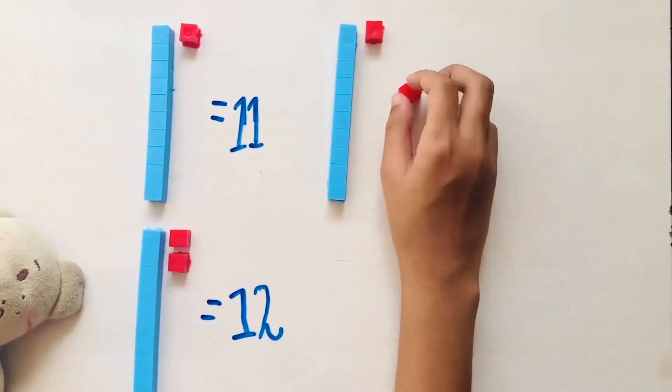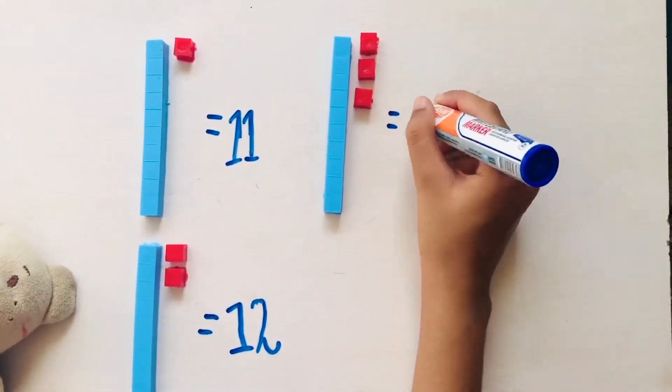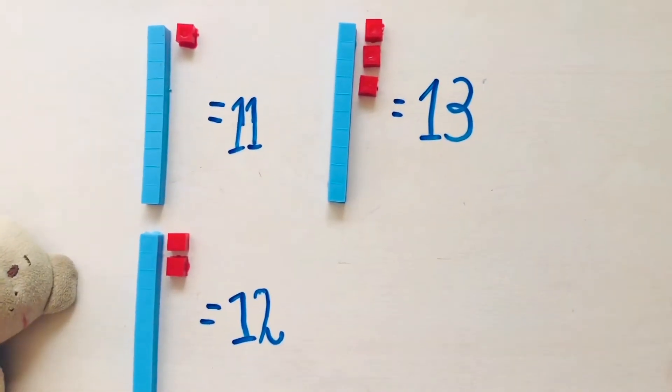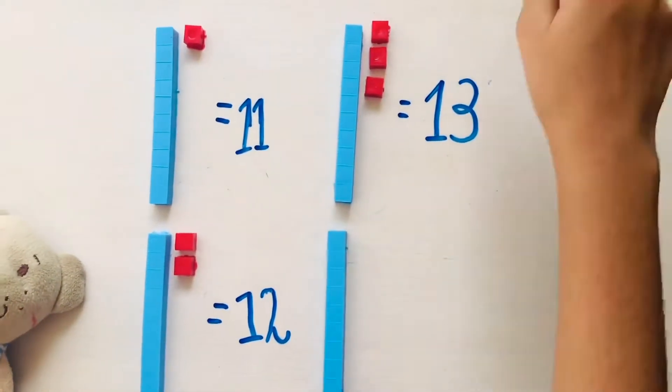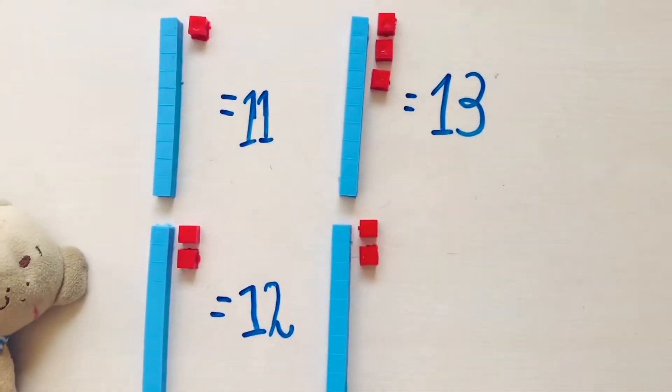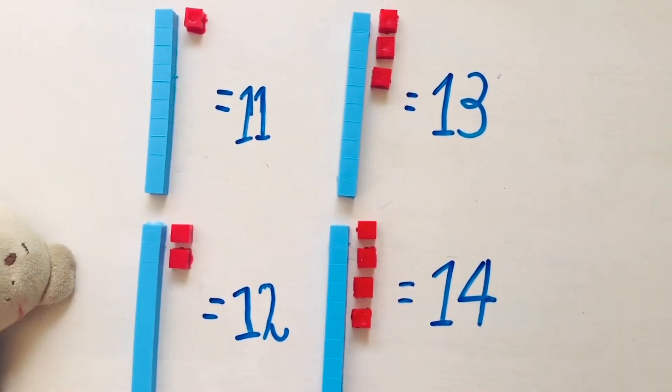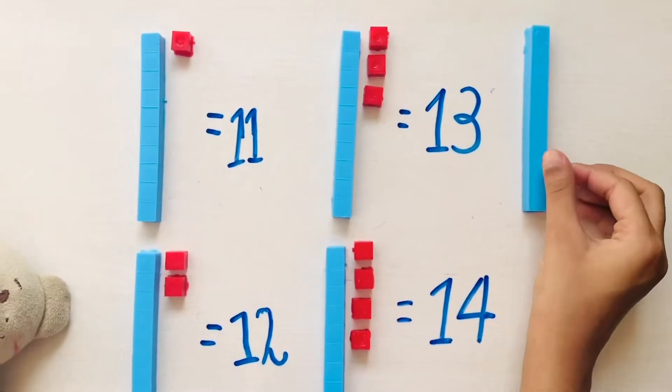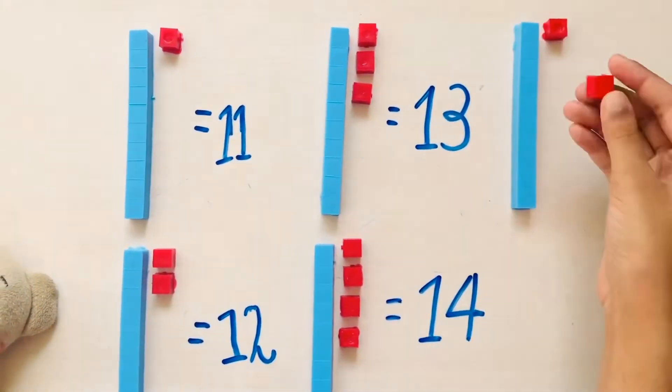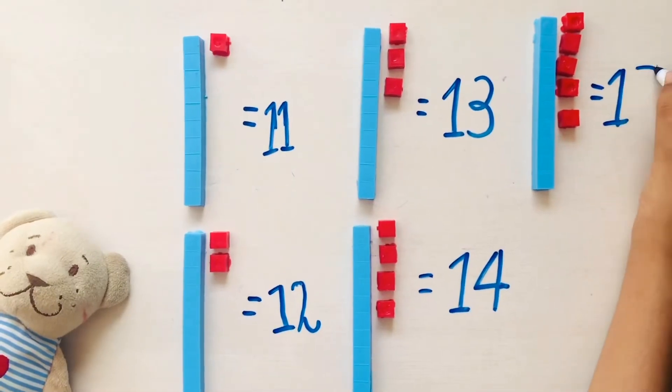1 ten bar and 3 units make 13. 1 ten bar and 4 units make 14. 1 ten bar and 5 units make 15.